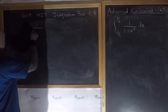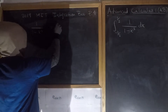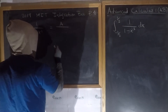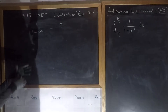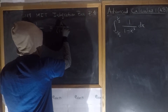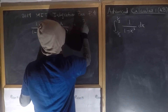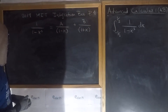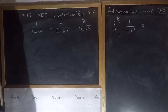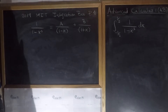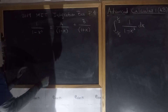We see that 1 over (1 minus x squared) can be written as some constant A over (1 minus x) plus B over (1 plus x). I have many videos on partial fraction decomposition so I won't teach the full method here. We start like this because 1 minus x squared, using difference of squares, factors as (1 plus x)(1 minus x).